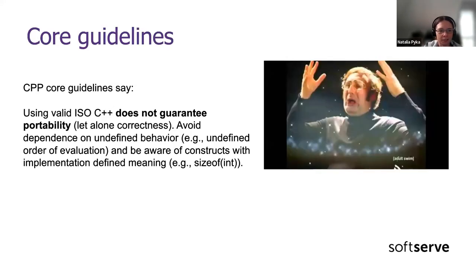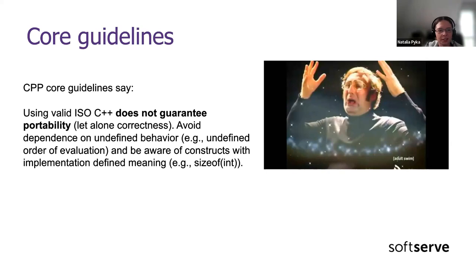extern C doesn't make C code magically compilable and cooperative with C++ code. And the core guidelines state directly that using valid ISO C++ doesn't guarantee portability or correctness. The guidelines give some general hints about what not to do, but they don't tell us much about how to be portable and safe each time. Unfortunately, it's the responsibility of the developer to keep these things in mind when writing code that should be portable.